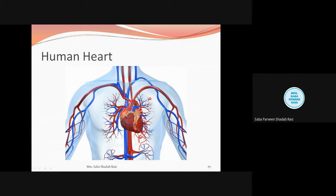When we talk about the size, just close your fist — it is the size of that fist only. The approximate size is 12 centimeters in length and 9 centimeters in width. When we talk about weight, in the case of the male the heart weighs 300 grams, and in the case of the adult female it is approximately 250 grams.